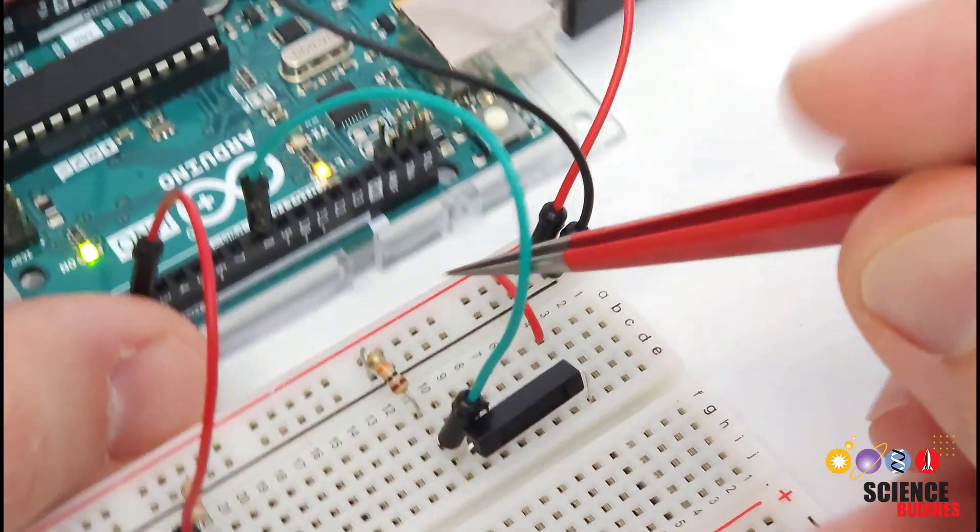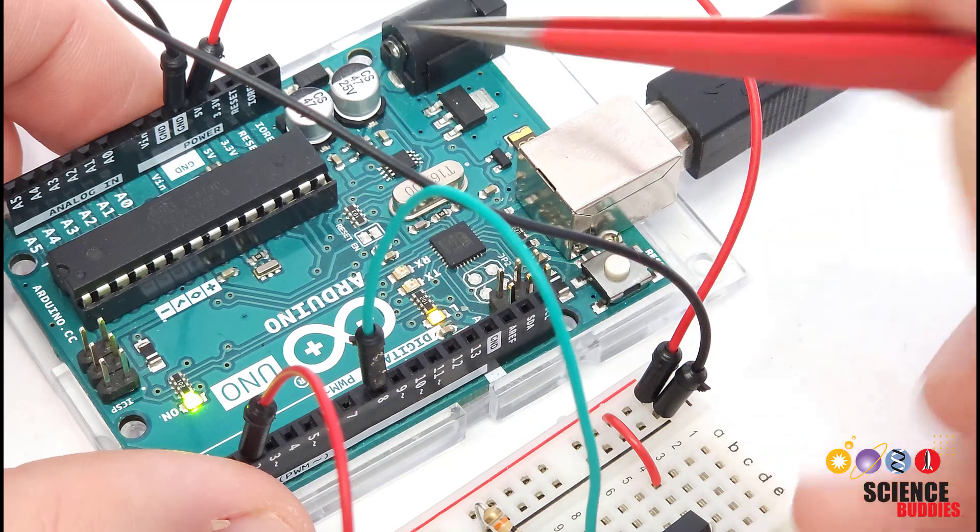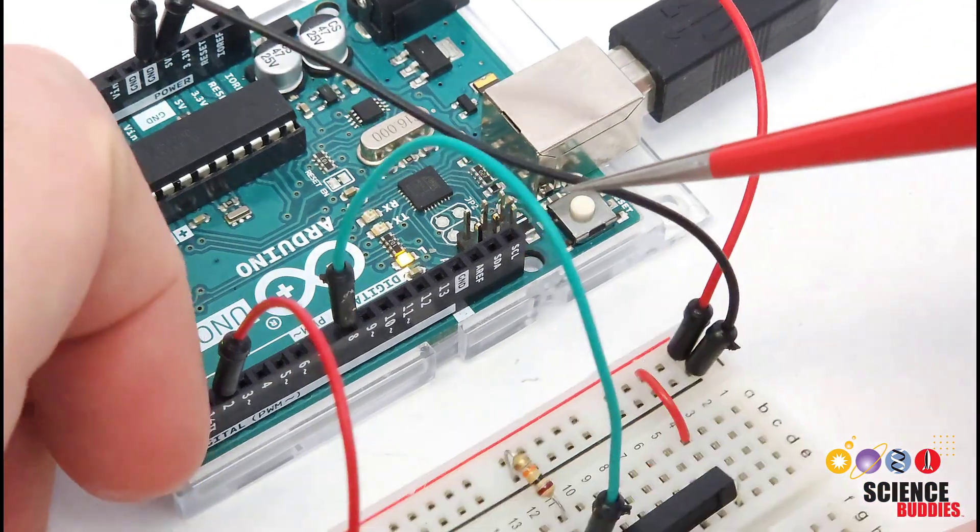And finally, note that the 5 volts and ground here are connected over to 5 volts and ground on the Arduino to power the circuit.